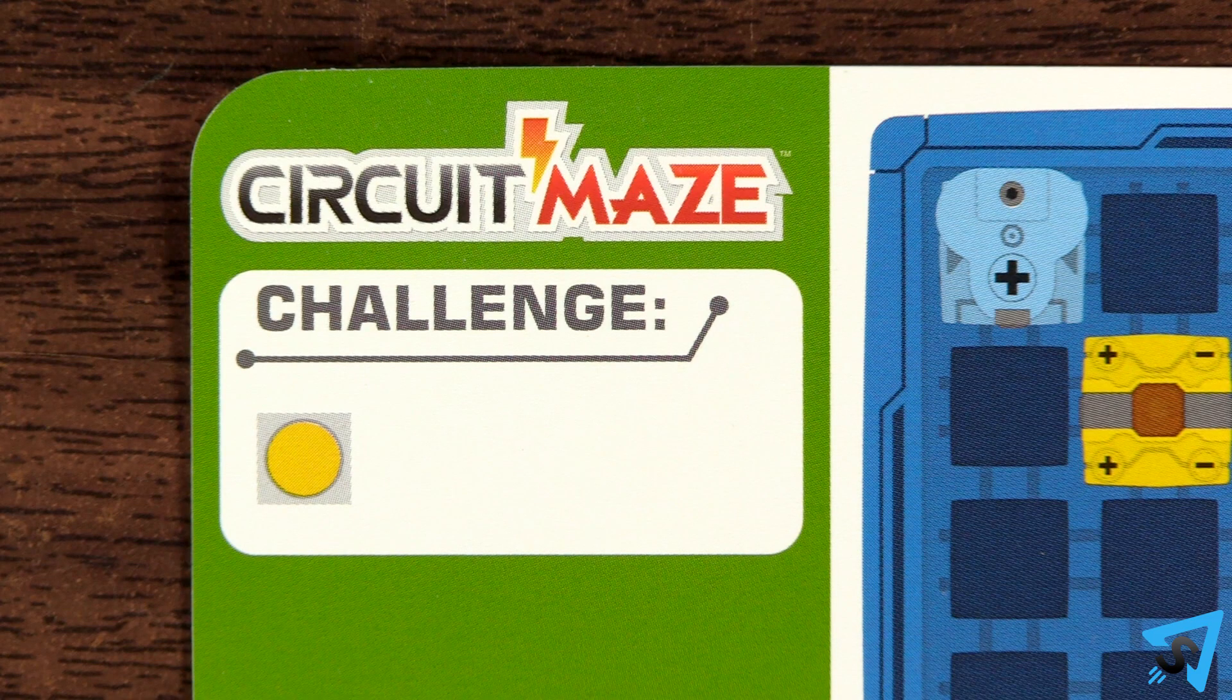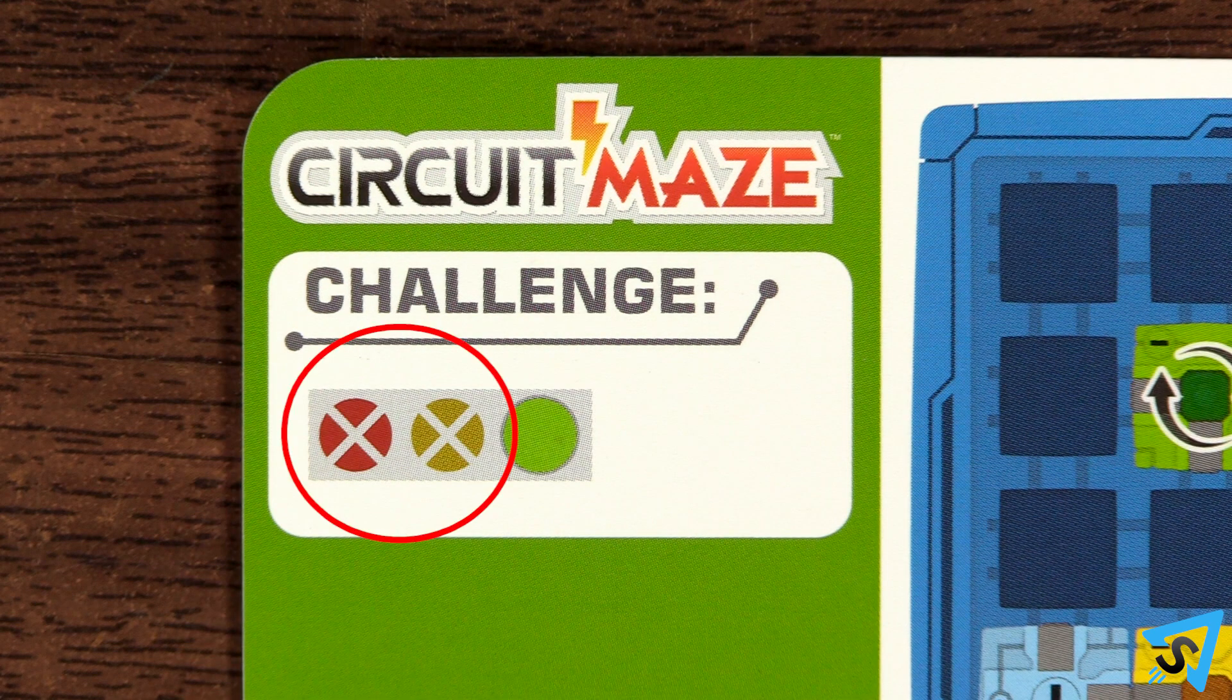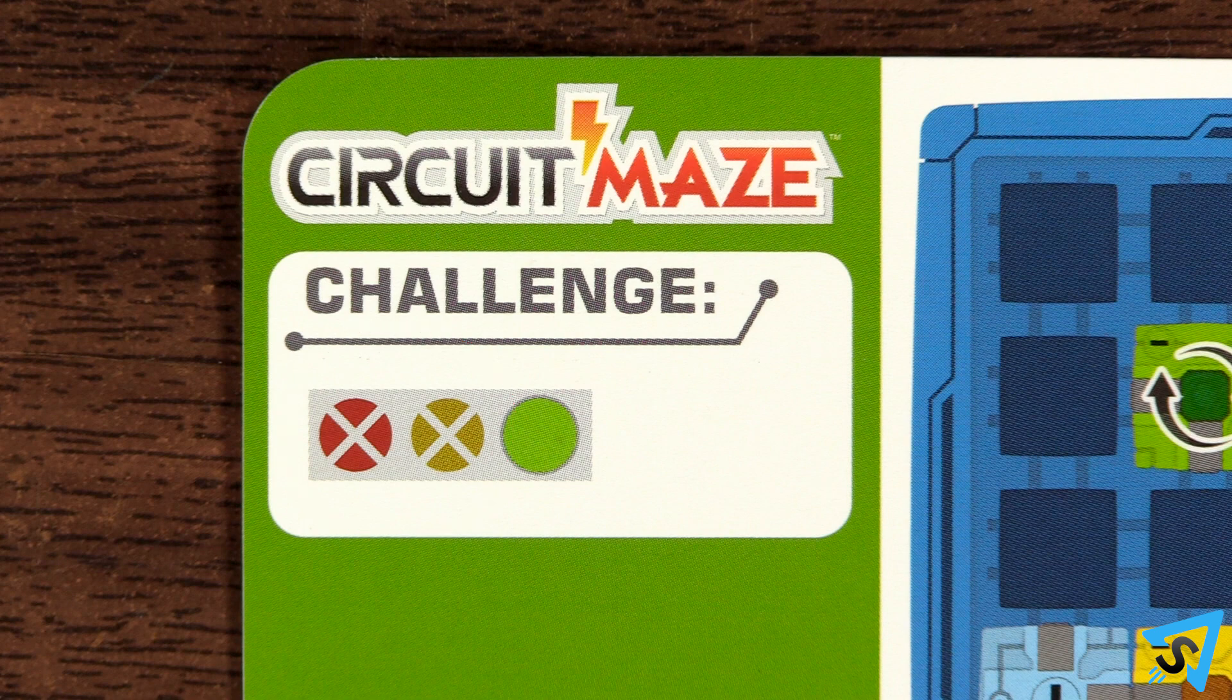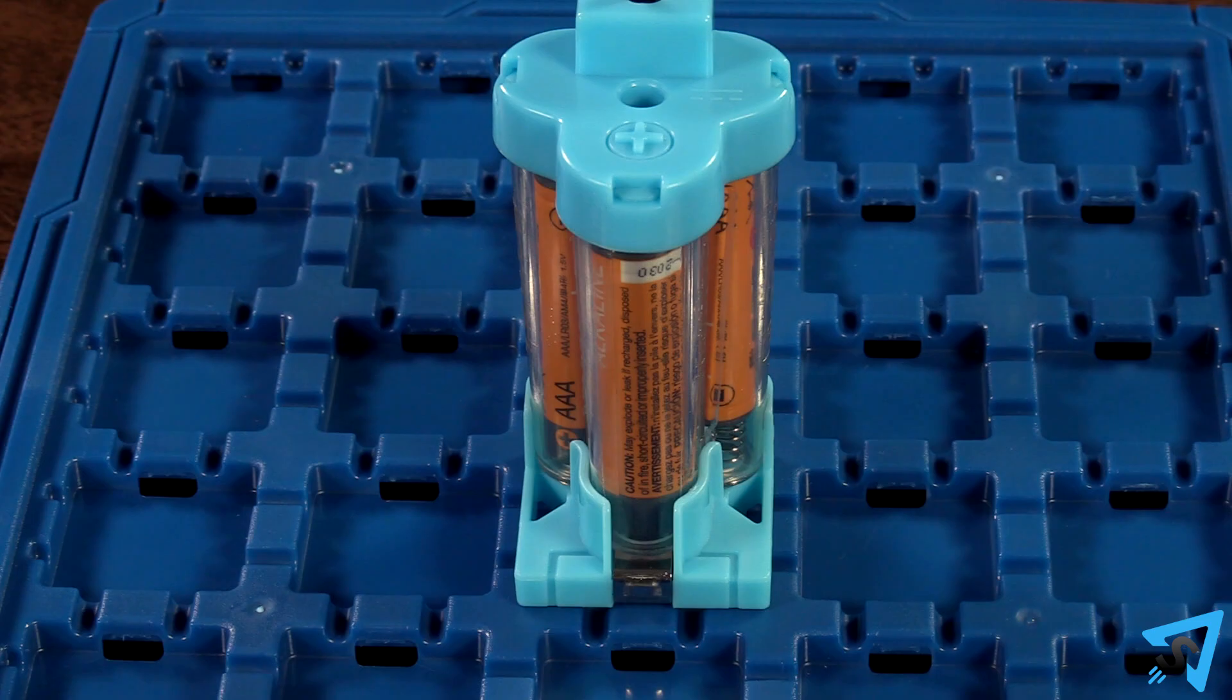The top left of the card shows you which lights need to be illuminated. If the symbol is faded with an X in it, then those beacons need to remain off to complete the challenge.